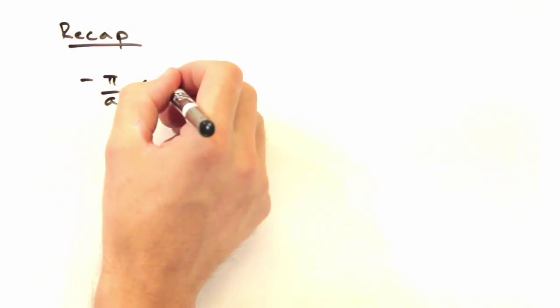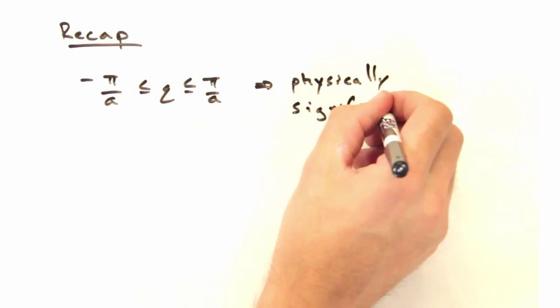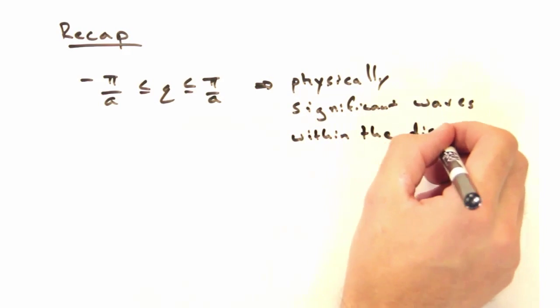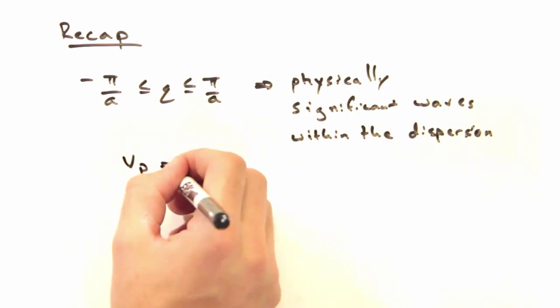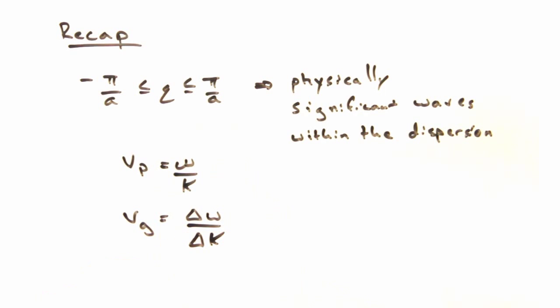Today we found q values between minus pi over a and pi over a will give us physically significant waves within our dispersion. Then we used our dispersion to find the phase and group velocities of our wave.